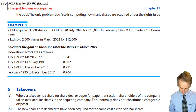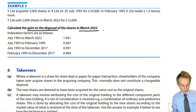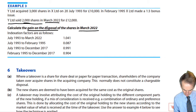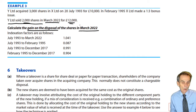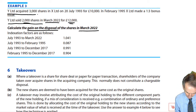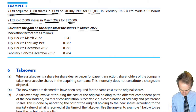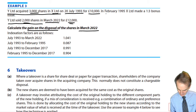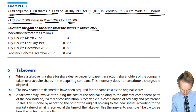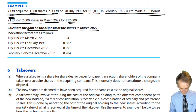Now we'll look at Example 3: calculate the gain on the disposal of shares in March 2022. Y Limited sold 2,000 shares in March 2022 for £12,000, so we know our sales proceeds. We look to see if any shares were acquired on the same day or in the previous nine days, or otherwise in the share pool. Y Limited had acquired 3,000 shares in X Limited back in July 1993 at a cost of £10,000 — that's the starting point for the share pool. All shares sold will come from the share pool.